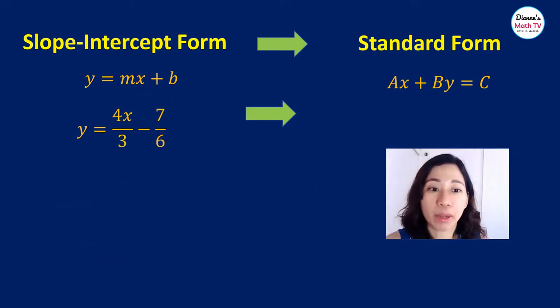For our last example, again, we have here fractions. I know that you do not want to deal with fractions, but that's life. We have to deal with fractions. Now in this case, our fractions are 3 and 6. So how do we get rid of the denominators 3 and 6? We multiply both sides by the LCD.